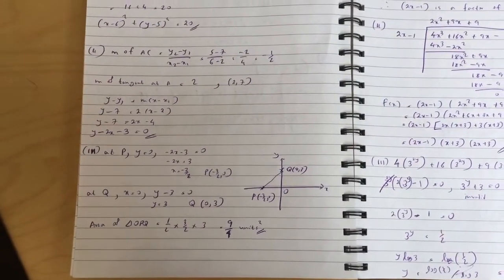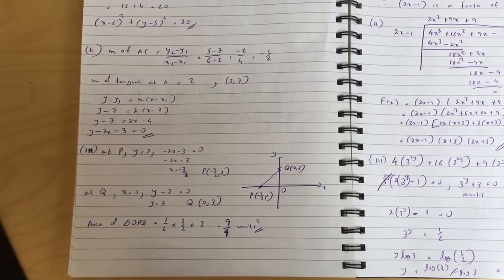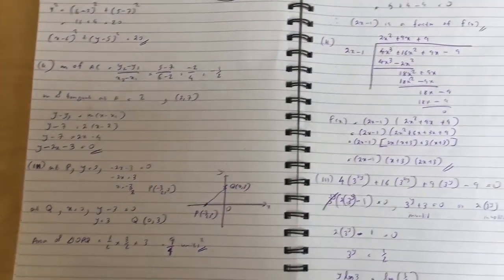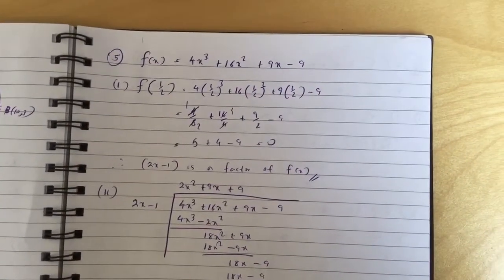For part 3, P is (-3/2, 0), Q is (0, 3), so the area of the triangle is 9.04 unit squared using the triangle formula. Question five, you just plug f(1/2) into the calculator and work it out.